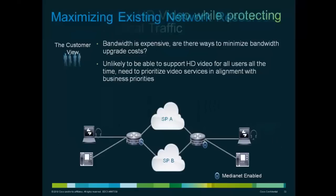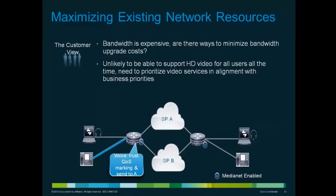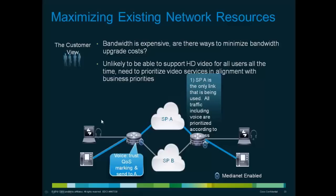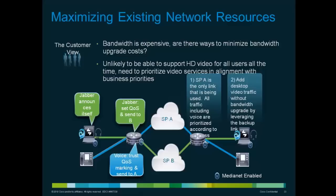A very important third use case is around maximizing network resources. Bandwidth is very expensive, so is there a way to minimize the need to upgrade? A lot of enterprises have backup links that they almost never use or that are currently underutilized. In this scenario, one can say: I've got voice traffic coming in, and I know it is voice traffic from a hard endpoint, so I'm going to send it through my primary links; whereas I've got some soft client video traffic coming in and I'll use my backup links to route them. The applications of metadata as a concept are practically limitless, and we are looking to add more attributes in future releases of MSI.